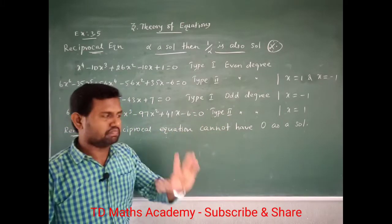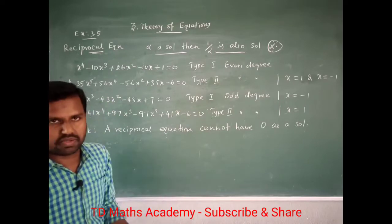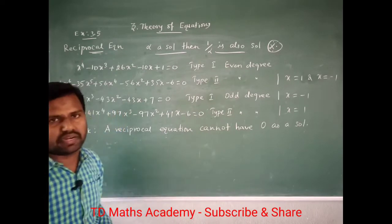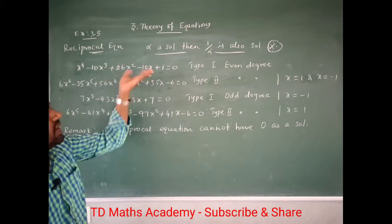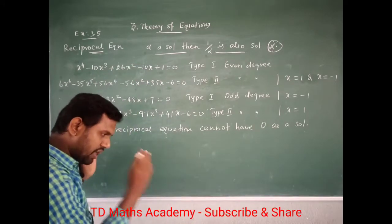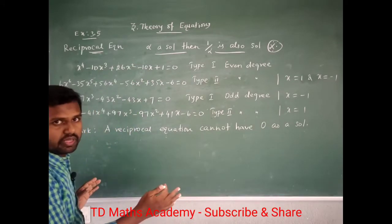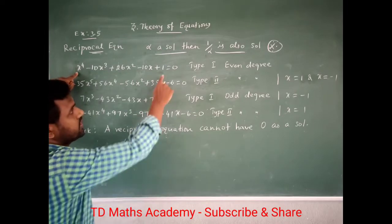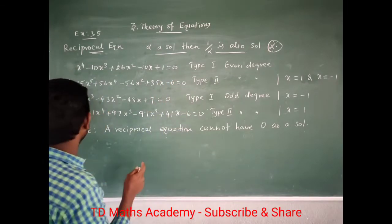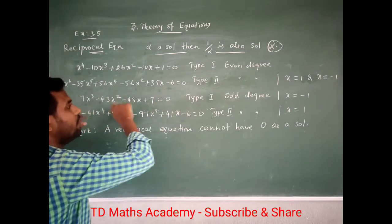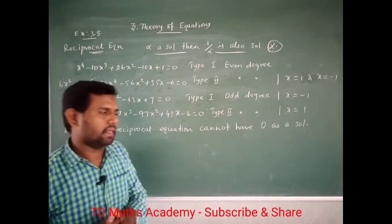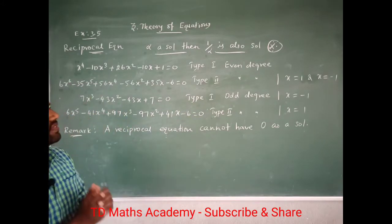So it is very simple. Even degree and odd degree apply to both Type 1 and Type 2. Type 1 has same signs, Type 2 has opposite signs. This is very easy to identify for 1-mark questions.